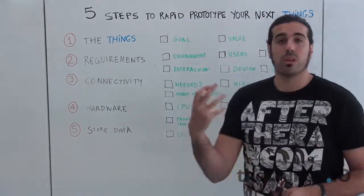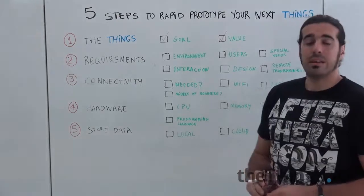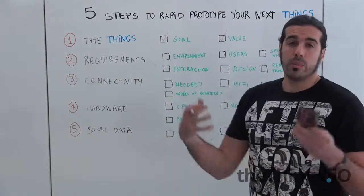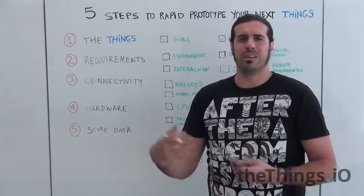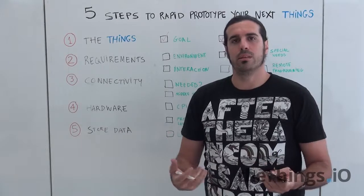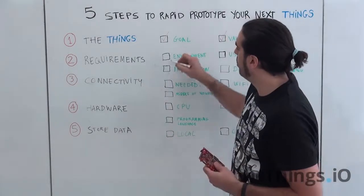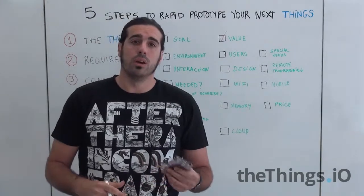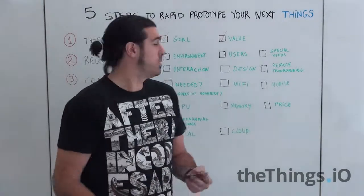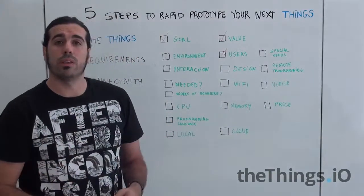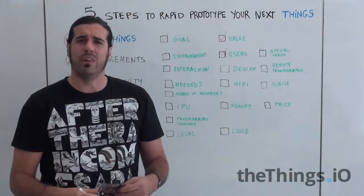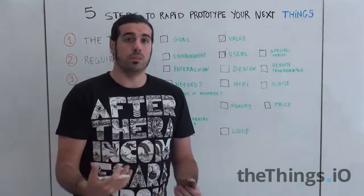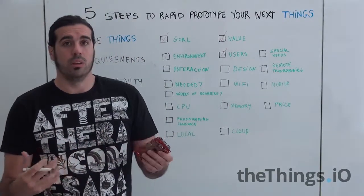The second step is requirements. What are the requirements of the environment where you're going to deploy your next thing? Are you deploying it in the middle of nature, at an event, or in your house? This will affect reliability. Also consider the users — are you building it for yourself, to sell to third parties, or to companies? Do you have special needs like buttons, vibration, or movement? These will require specific voltages and components.